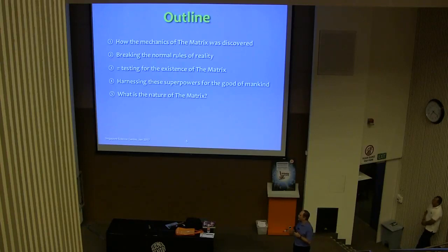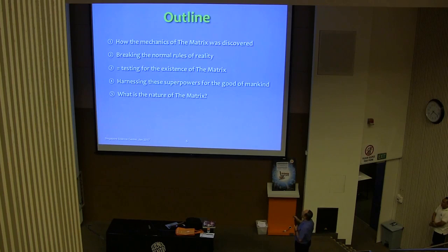I'm going to begin by giving a little historical overview about how the mechanics of the matrix was discovered in our world, in quantum, and how it in some senses seems to break the normal rules of reality. And that this is not just a theory, but something which you can really test in the lab, and test for the existence of the matrix, for this hidden level of reality.